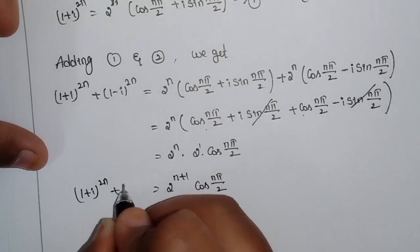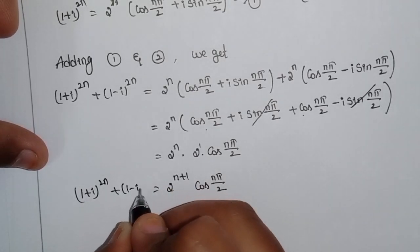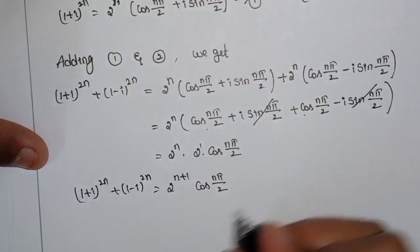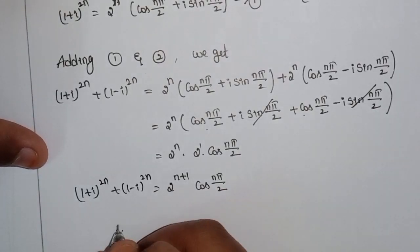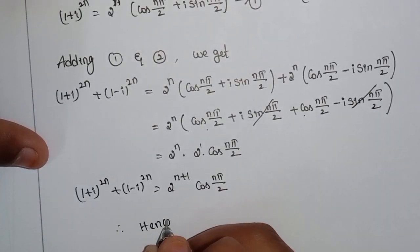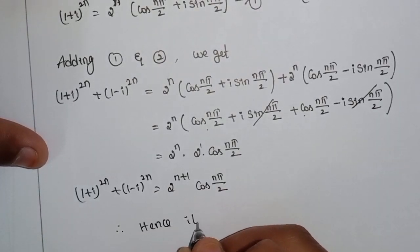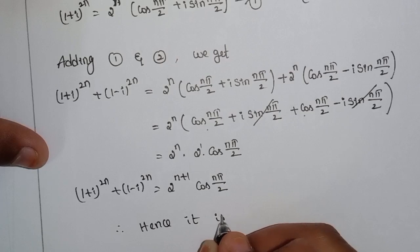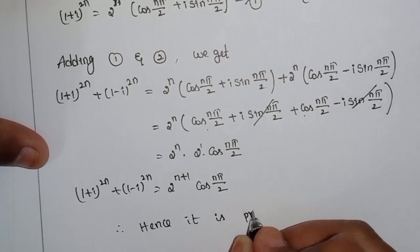(1+i)^2n + (1-i)^2n = 2^(n+1) · cos(nπ/2). Hence it is proved.